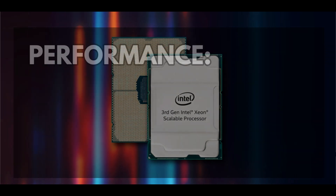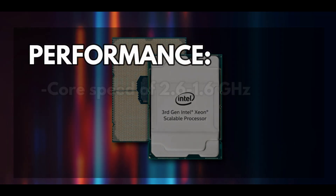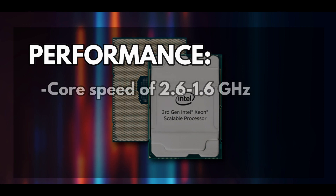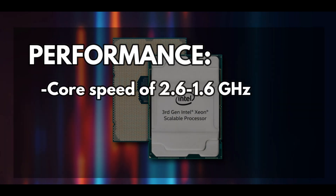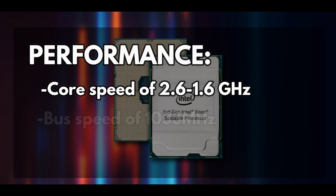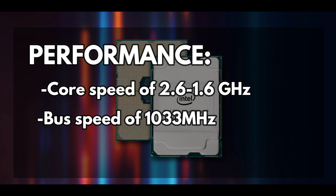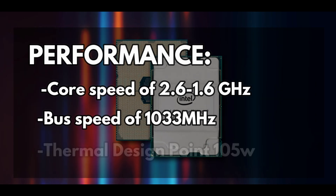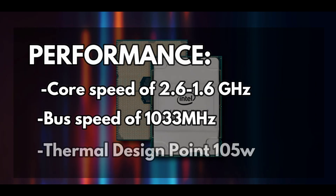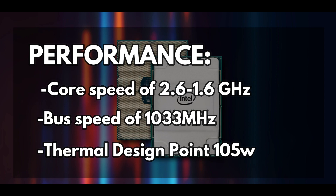The performance of the Intel Xeon 5300 includes a core speed ranging from 1.60GHz to 2.6GHz, with bus speeds ranging from 1,066 to 1,333MHz, and a thermal design point of 105W.